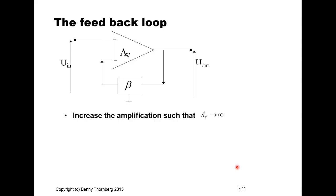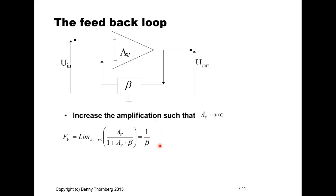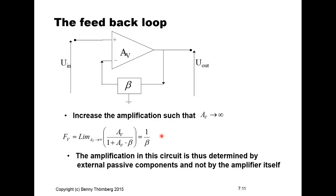Now assume we increase amplification AV such that it approaches infinity. Looking at the denominator, if AV approaches infinity we can neglect the element 1, which reduces the voltage amplification to 1/β — dependent only on the external network beta, and not on the actual voltage amplification of the amplifier itself. We can conclude that the amplification of this circuit is determined by the external passive components, not by the amplifier itself.